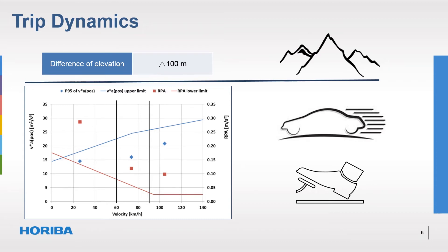The driver behaviour and vehicle dynamics are assessed using two parameters calculated from the vehicle speed recorded over the RDE test. These are known as V times APOS and Relative Positive Acceleration (RPA), limits for which are specified in the directive.